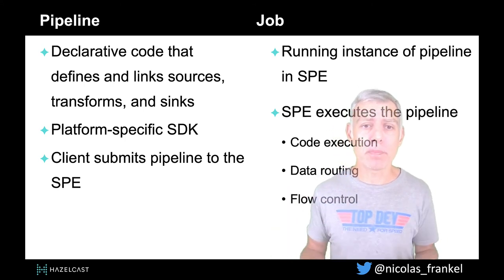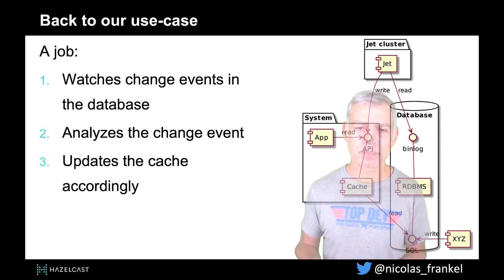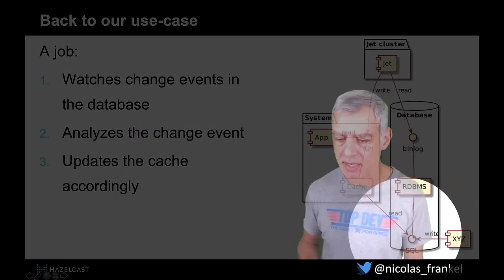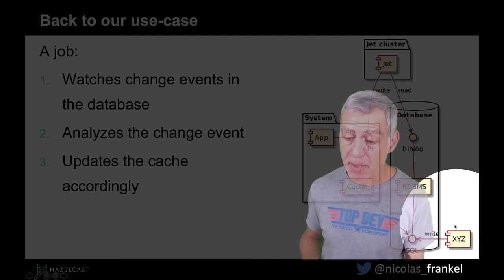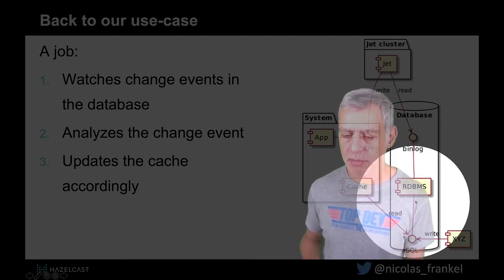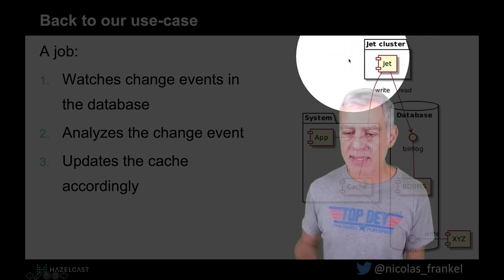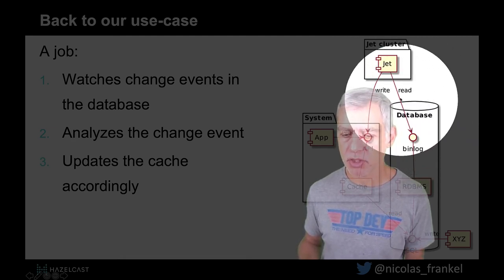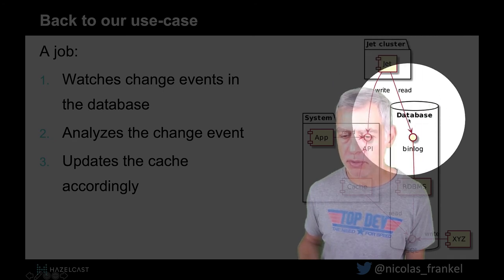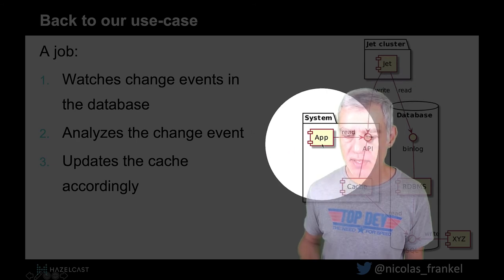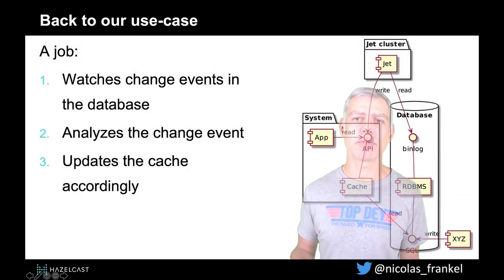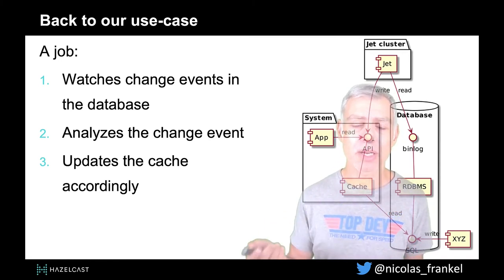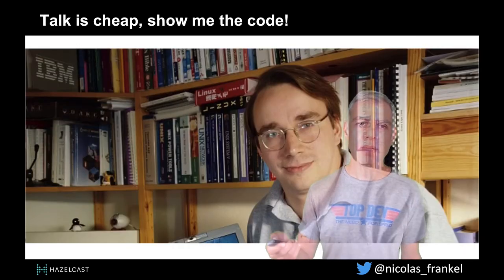Now we have all the pieces and we can finally resolve our issue. We have our application still reading from the cache, and our database still has a batch that changes the reference data. But we add a Hazelcast cluster as a third-party component that reads every time there is a change, gets informed about the change, and writes it into the cache. So the application will always read from the cache knowing it is up-to-date or very close to real-time up-to-date.